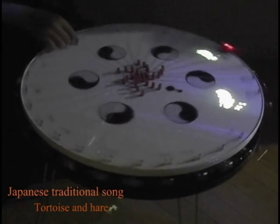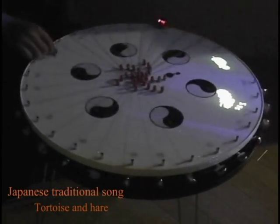If the disc is rotated, kaleidoscope pictures will change. If the disc is rotated, the tortoise and the hare make the race.